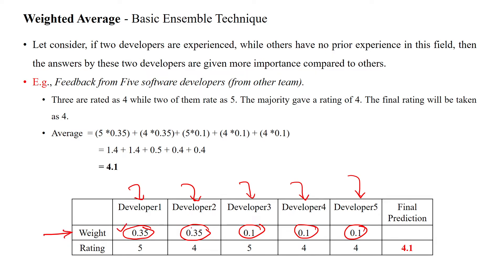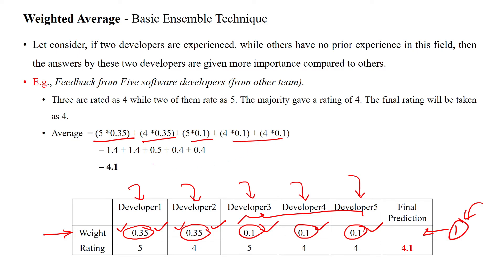More weightage is given to the first two models, and smaller weightage is given to the remaining three models. Depending on experience and knowledge, we assign weights — but the summation of all weights must equal one. The sum of 0.35 + 0.35 + 0.1 + 0.1 + 0.1 equals one. We then use that weightage for the calculation, taking a weighted average. This is called the weighted average basic ensemble technique.